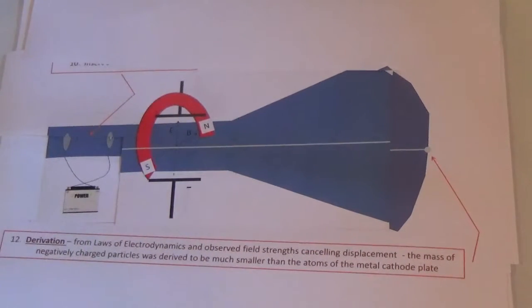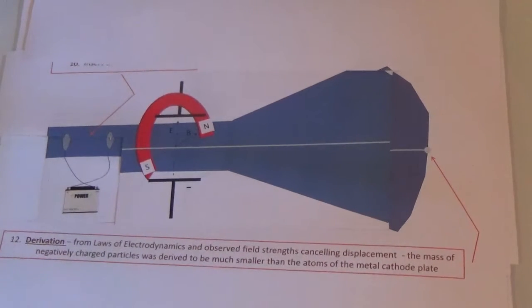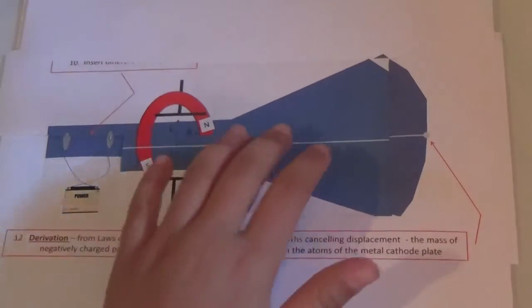From the laws of electrodynamics and the observed field strengths, it can be derived that the mass of the negatively charged particles is much smaller than the atoms of the metal cathode plate. The particle that creates this cathode ray is now known as the electron.